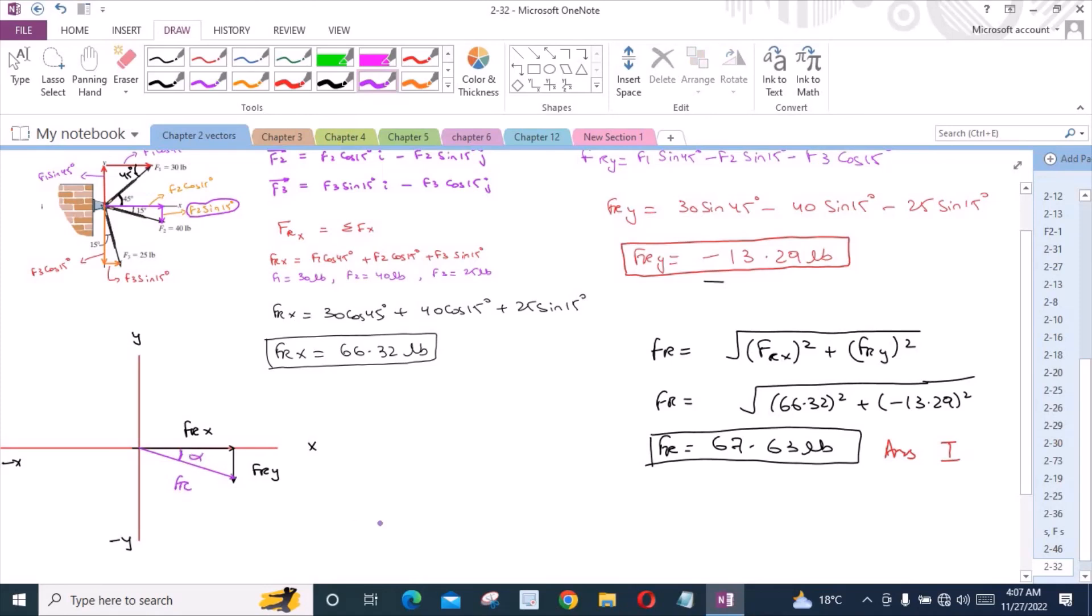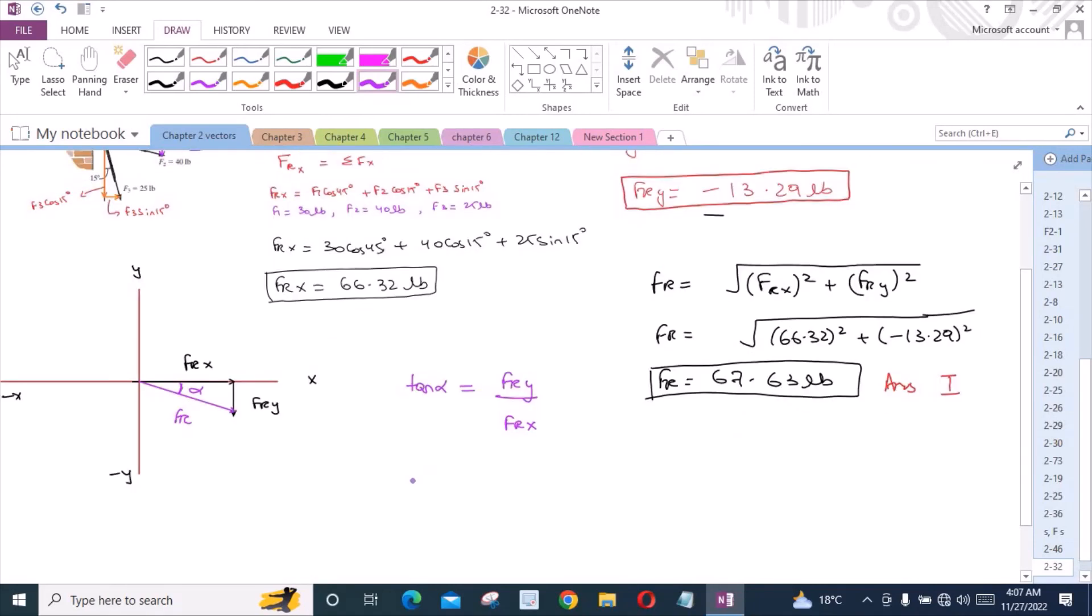Let's call this alpha. So if I apply tan alpha, tan alpha is equal to Fry upon Frx. So we have tan alpha equals 13.29 divided by 66.32. So alpha is equal to 11.33 degrees. Now this is our second answer.